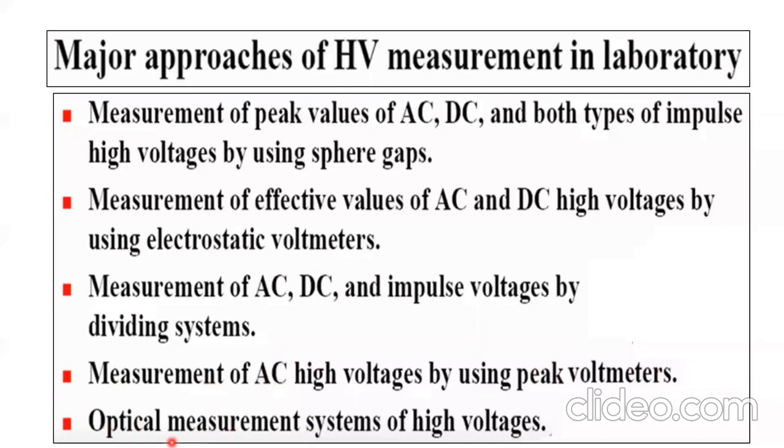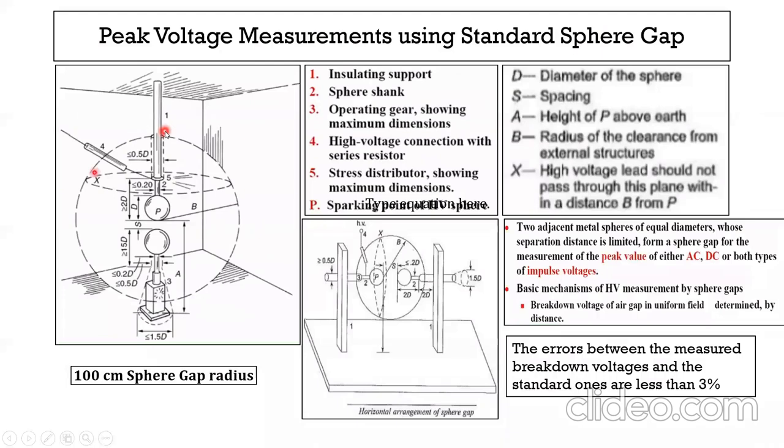If you want to measure large voltage, what you do is introduce a small shunt there and measure the voltage across that. Measurement of AC voltage by peak voltmeters. Recently, after development in electronics and optical measurements, optical measurement has become very typical.